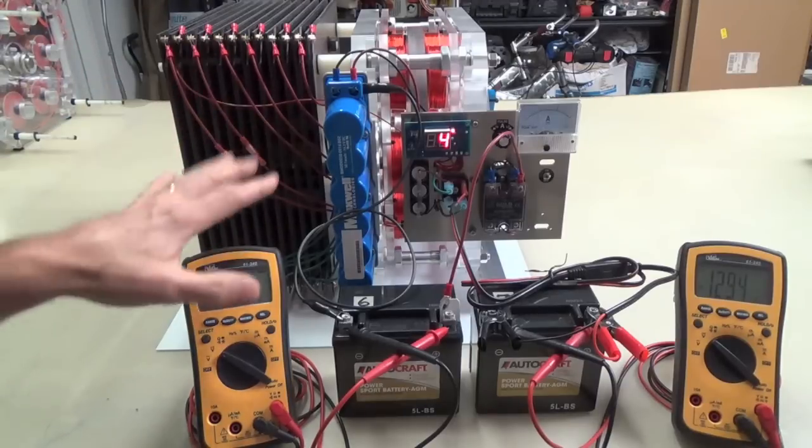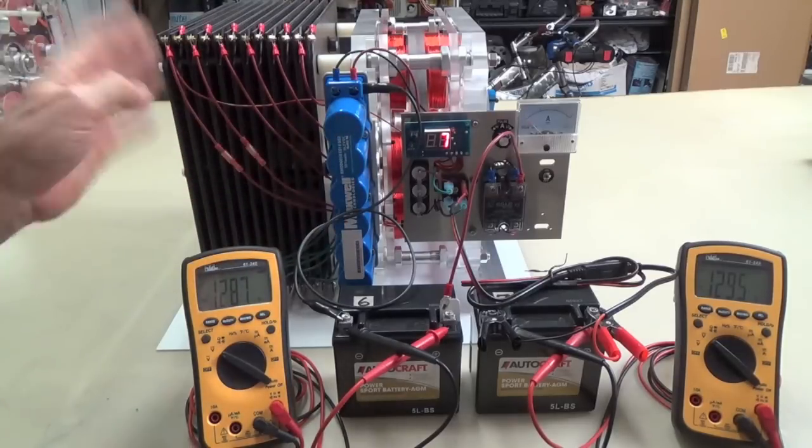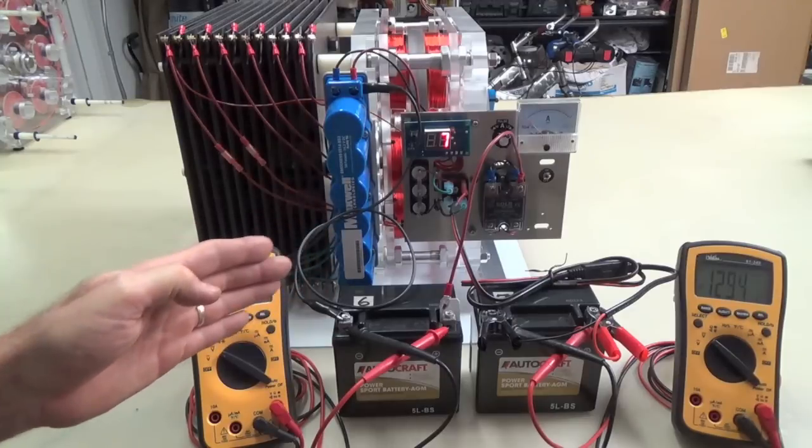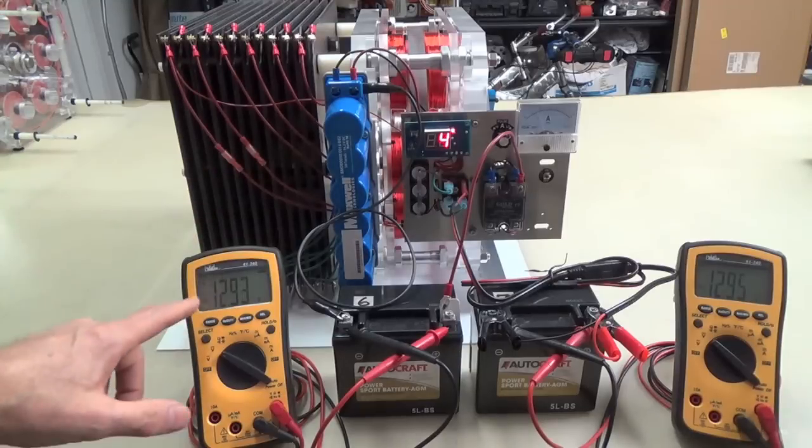Now, this is a much smaller system, obviously, by leaps and bounds smaller. But it does the same thing. There's a shorter on time and a longer off time. And the off time, it's generating power. So the on time is generating power as well. Now, you can see what it's doing here.